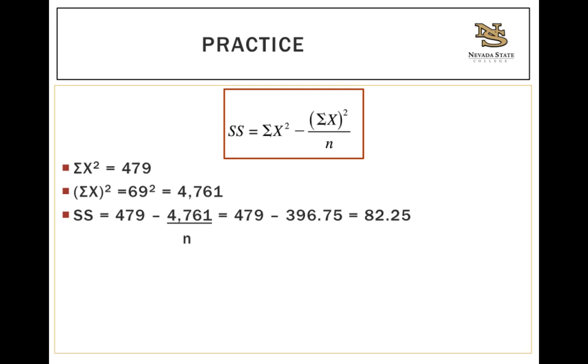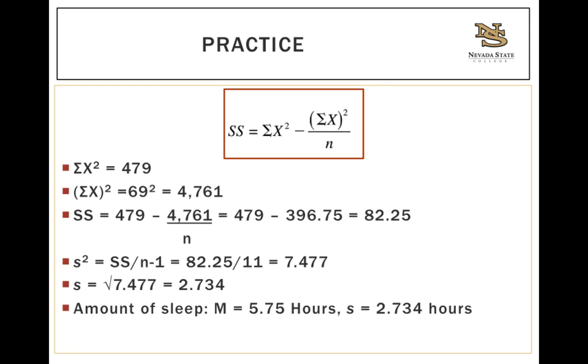In order to find our variance, which in this case we represent with a small s because we're dealing with a sample, we take our sum of squares and divide by n minus 1. Remember that's the big difference between a sample and a population. So here we're dividing our 82.25 by 11, that gives us 7.477. To get our standard deviation, we simply take the square root of that number and that gives us 2.734. So all of that so that we can know that the amount of sleep that the students got before their exam was an average of 5.75 hours with a standard deviation of 2.734 hours. Well, that's quite a big range when you think about it - somewhere between 3 hours and maybe 8.5 hours. So some people aren't getting very much sleep.